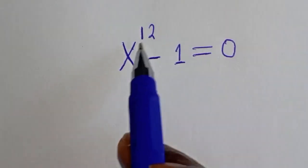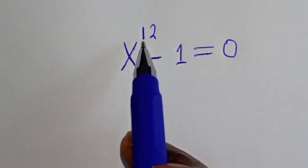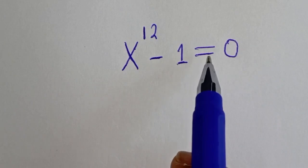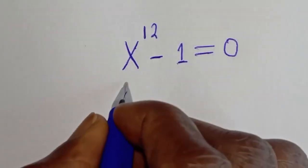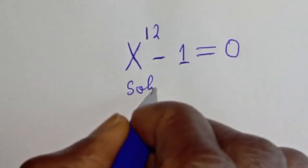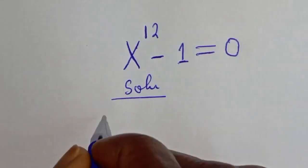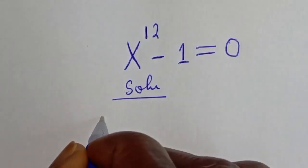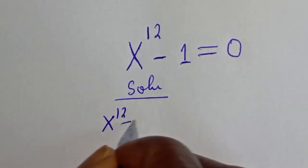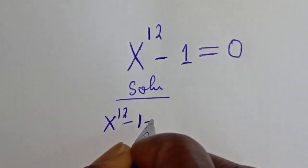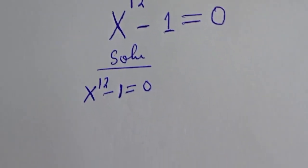Hello. How to solve for s from this given equation: s raised to power 12 minus 1 is equal to 0. We have the given equation, s raised to power 12 minus 1 is equal to 0.